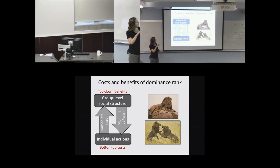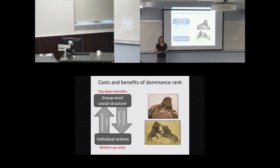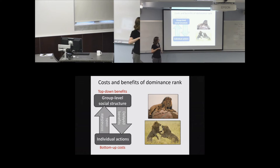Once this group-level social structure forms, we can see the effect of top-down benefits. These benefits include increased access to valued resources, which can also increase individual fitness over time. But these benefits are delayed. So we have an interaction between these bottom-up immediate costs and then these top-down, delayed processes that actually give individuals the benefits of rank in the hierarchy.